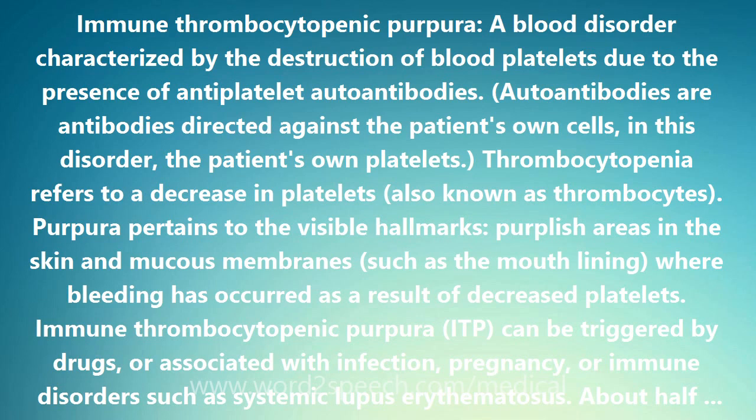In this disorder, the patient's own platelets are targeted. Thrombocytopenia refers to a decrease in platelets, also known as thrombocytes. Purpura pertains to the visible hallmarks — purplish areas in the skin and mucous membranes such as the mouth lining where bleeding has occurred as a result of decreased platelets.